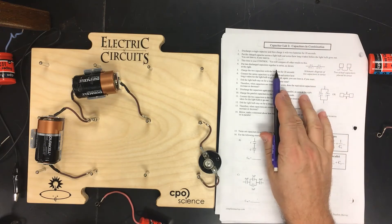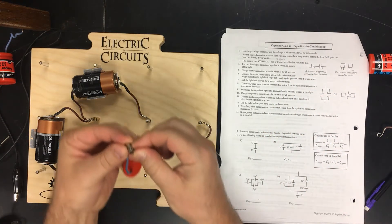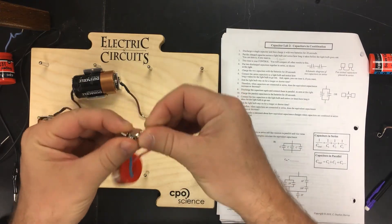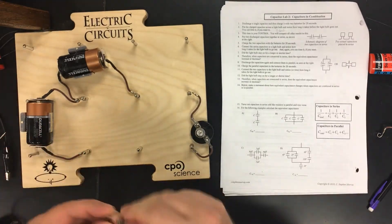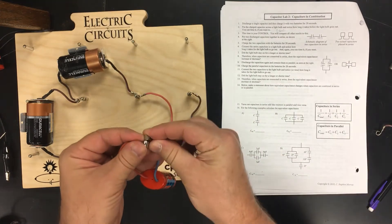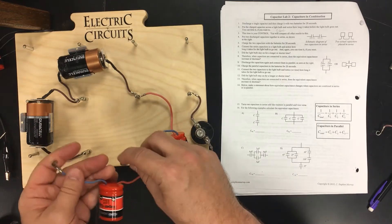Now it says put two capacitors in series. All right, let me just charge it. Move this up a little bit just to be sure we can see. All right, so that's just charged. There's one capacitor in series. Discharge this. Okay, second capacitor in series.